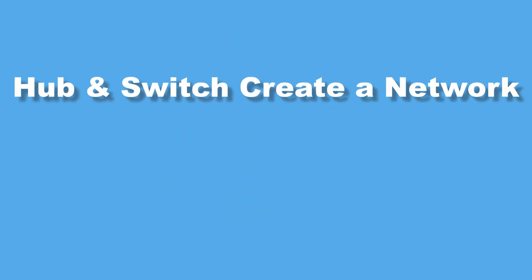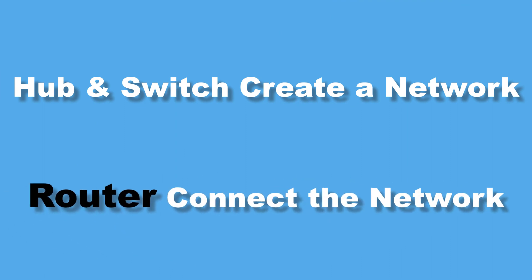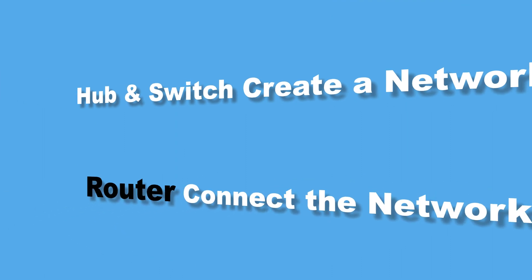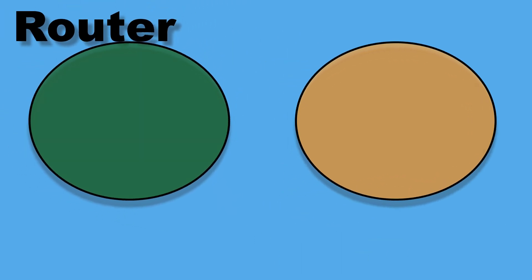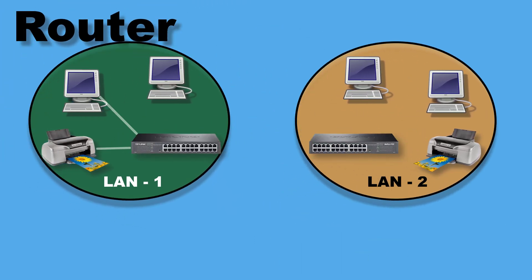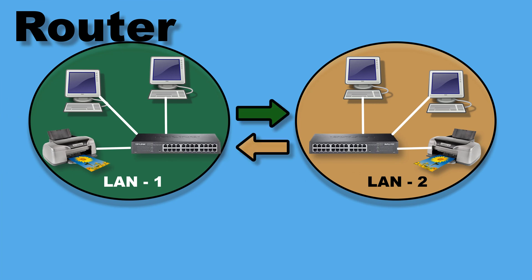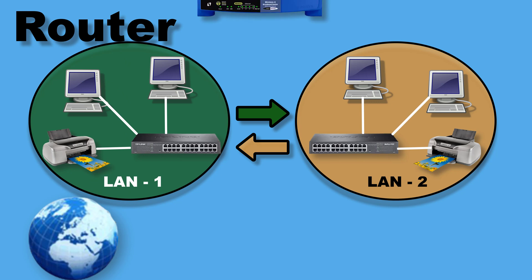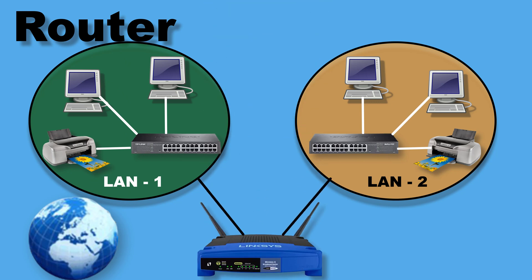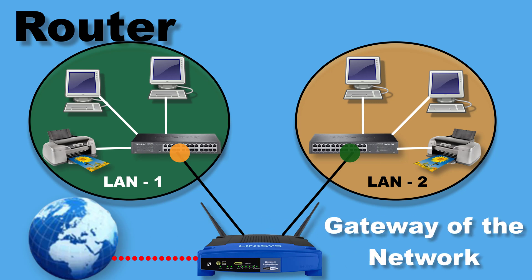Hub and switch create a network; a router connects networks. As we know, hubs and switches create LAN networks, but what happens when we need to send data between LAN networks or out to the internet? That's where the router comes in. A router does exactly what its name implies: it routes or forwards data from one network to another based on IP addresses. That's why a router is also called the gateway of the network.